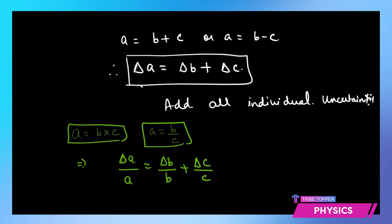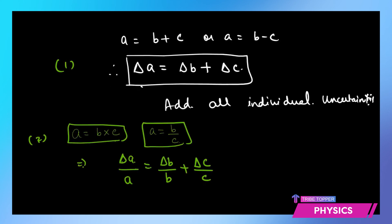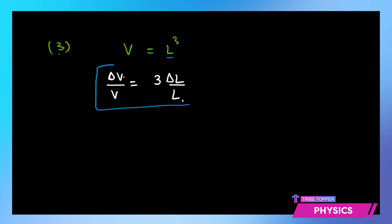You add the fractional uncertainties. And if there is a power — for example volume V = L³ — then the fractional uncertainty in V is ΔV/V = 3 × (ΔL/L). So remember these rules: for addition or subtraction, add the absolute uncertainties; for multiplication or division, add the fractional uncertainties; and for a power, that power comes as the multiplier of the fractional uncertainty. That is all you need to know about uncertainties.